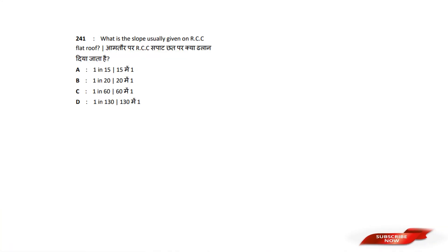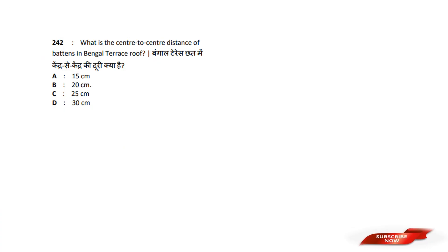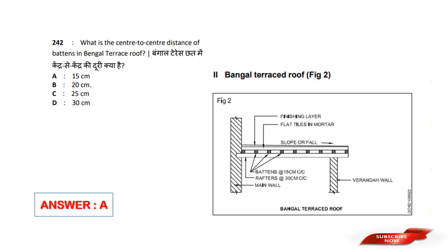What is the slope usually given to RCC flat roofs? Options are: 1 in 15, 1 in 20, 1 in 60, 1 in 130. Answer option C — 1 in 60. What is the center-to-center distance of the battens in Bengal Terrace? Options are: 15 cm, 20 cm, 25 cm, 30 cm. Answer option A — 15 cm.